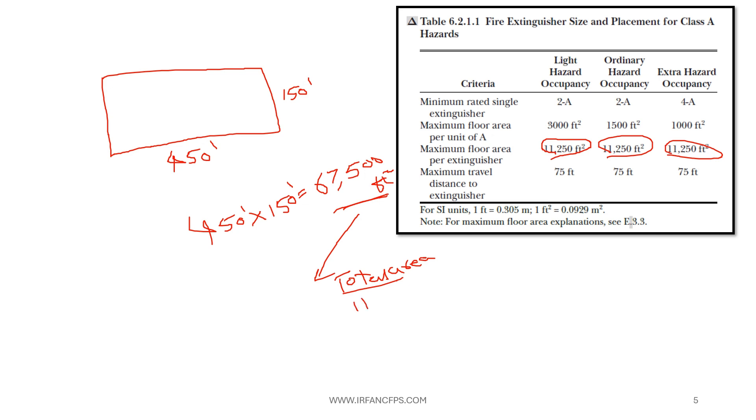So this total area divided by the maximum floor area per extinguisher for any hazard it is 11,250 square feet. So no need to worry about the hazard. So total area 67,500 divided by 11,250. So approximately we are going to get about 6 numbers. So in this way we need to calculate the number of fire extinguishers based on the maximum floor area concept.